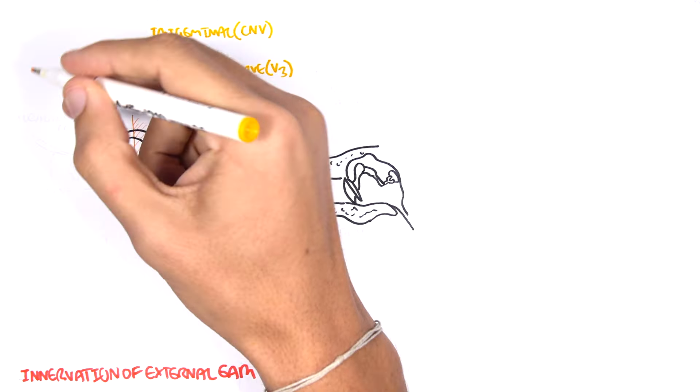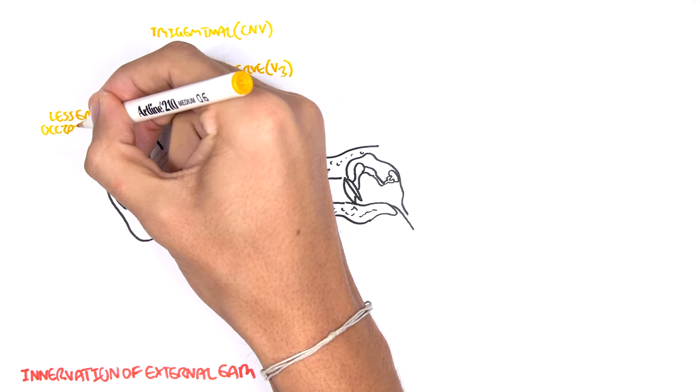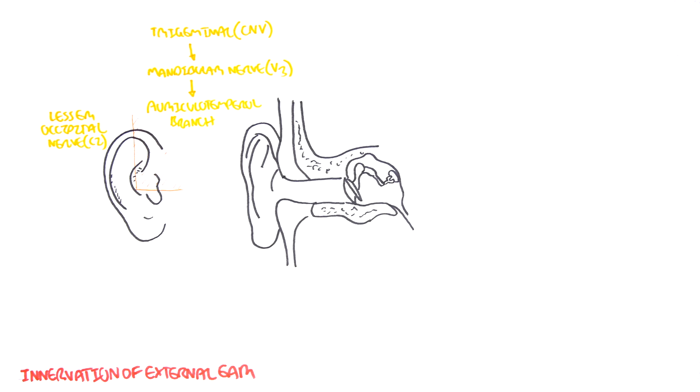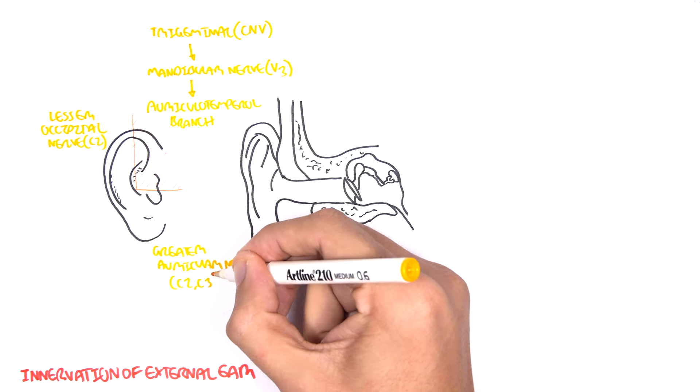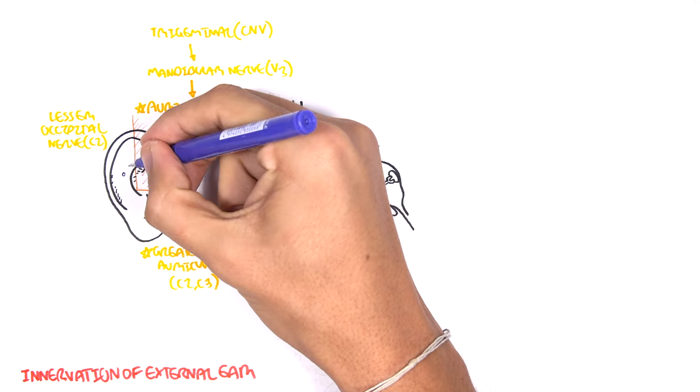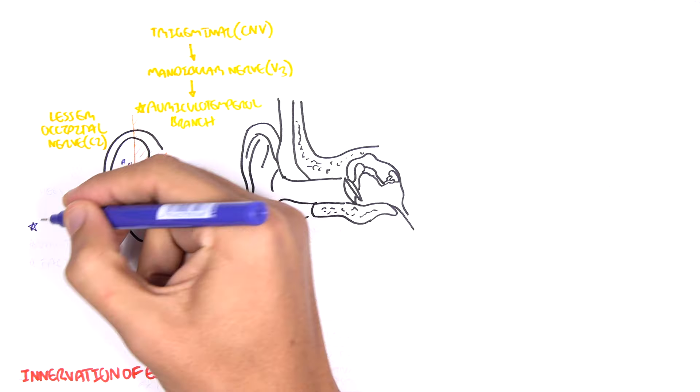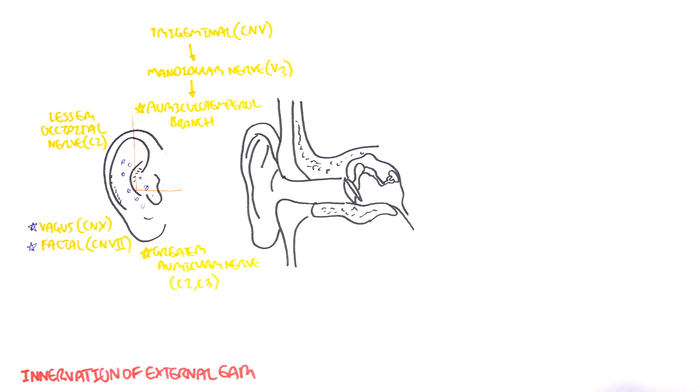The other parts are supplied by the lesser occipital nerve, which originates from the C2 spinal cord, and the greater auricular nerve, which is from the C2 and C3 spinal branches. There are also auricular branches of the facial and vagus nerves.